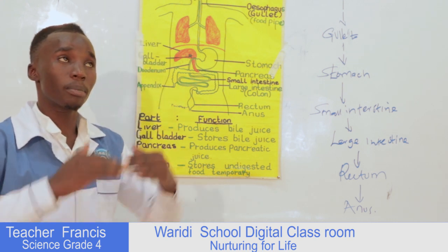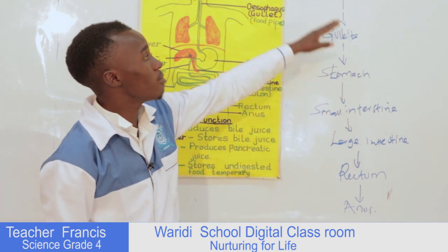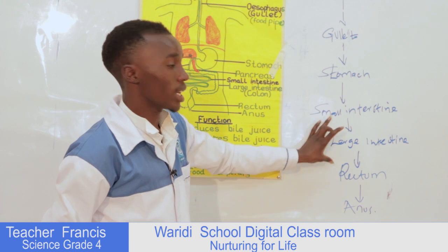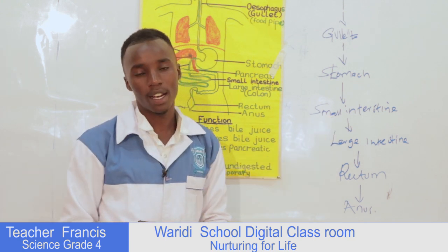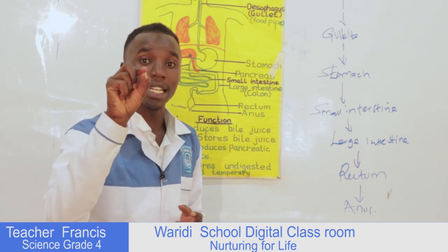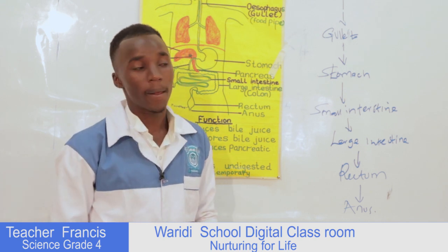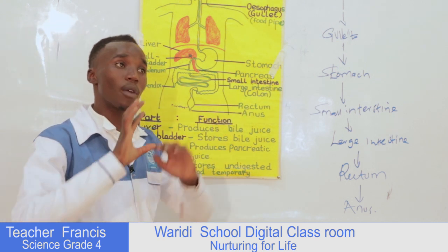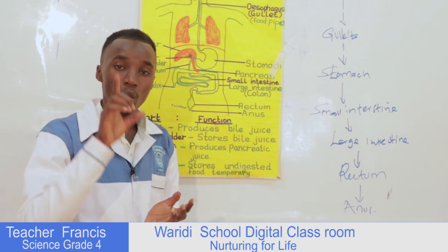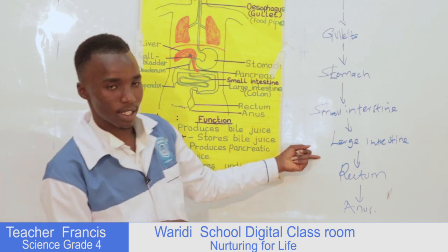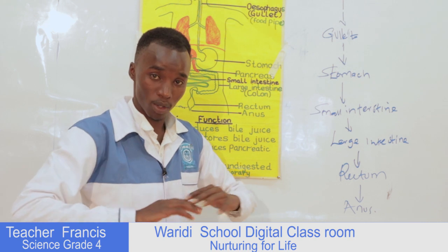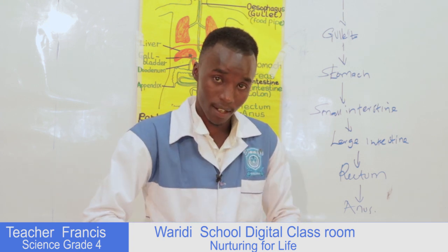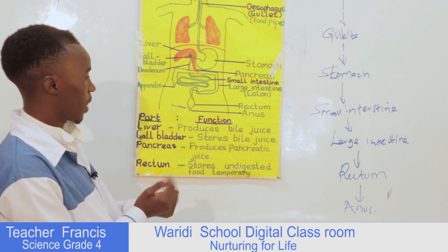The process continues — from the mouth all the way to the anus. We've moved from the mouth, gallet, stomach, and small intestine. The next stage is the large intestine. In the large intestine, absorption of water and mineral salts from the digested food takes place. Another name for the large intestine is the colon. After the digested food has been processed, the undigested part moves all the way to the rectum.